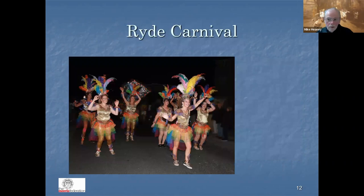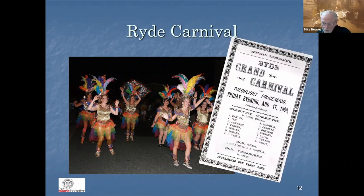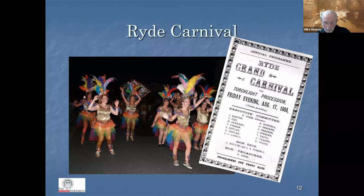Here is Ryde Carnival in 2022, shown because there's no picture from the 1880s when the carnival began. The programme for the second year, 1888, included an Arab chief, Red Riding Hood, 12 ghosts, the Ryde Town Band, 12 Morris dancers, 100 children with Chinese lanterns, tambourines and other delights. The chairman and treasurer was one W. Gibbs.